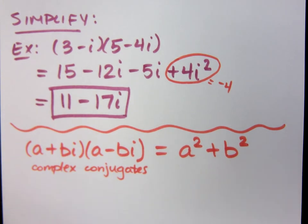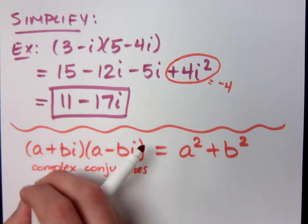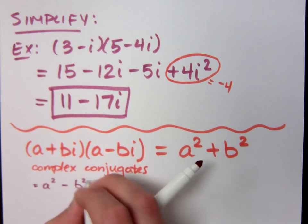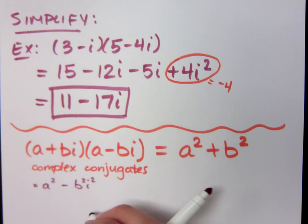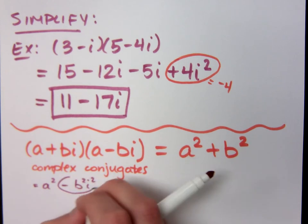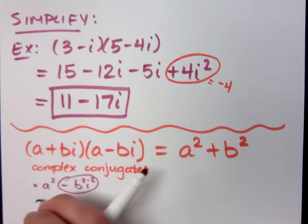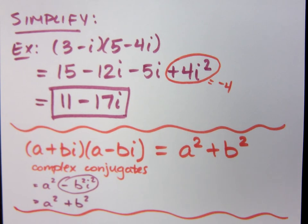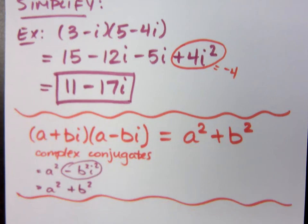If you had done the difference of squares here, you would have had a squared minus b squared i squared. But what happens to minus b squared i squared? It becomes a positive b squared. So what happens here is that when you multiply complex conjugates, you don't get a complex number. You get something that's real.